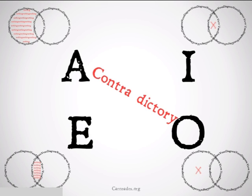The first relationship we had was that A and O are contradictory. This is because when you overlap those Venn diagrams, the X where there's supposed to be something falls into the same area that is shaded, telling us that there's supposed to be nothing. The same holds true for E and I statements.